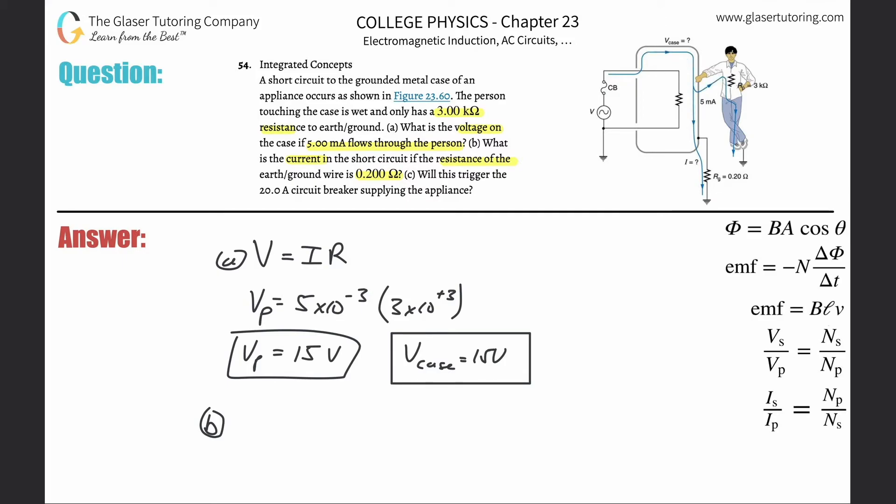So since it's asking now what is the current in the earth ground wire, we need to know. So in order to find that, let's use Ohm's law again. V is equal to IR. If I need to find then the current in the short circuit, then what I need to do is...